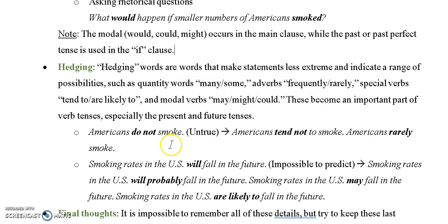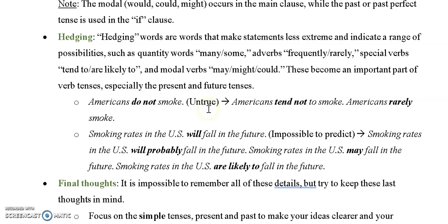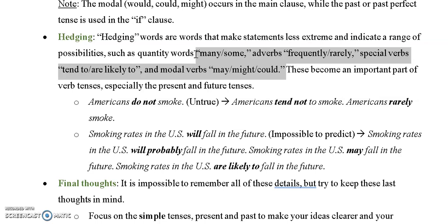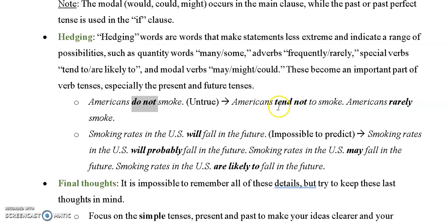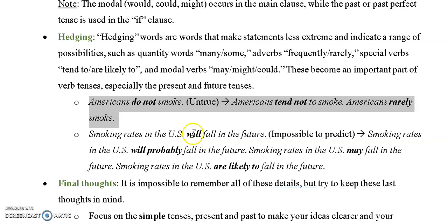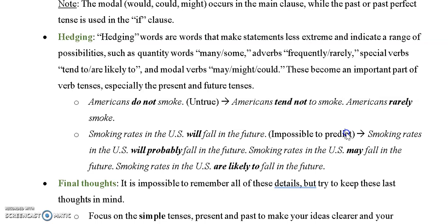Hedging words are words that reduce the degree of certainty, because in reality things are not always certain. We cannot always say 'all people' but rather 'many' or 'some people.' We can't say they 'always' or 'never' do it, but rather 'frequently' or 'rarely.' This is academic expression. For example, instead of 'Americans do not smoke,' say 'Americans tend not to smoke' or 'Americans rarely smoke.' Instead of 'smoking rates in the US will fall in the future,' say 'smoking rates will probably fall in the future.' You might also use 'may' or 'are likely to' — these are all useful hedging words.